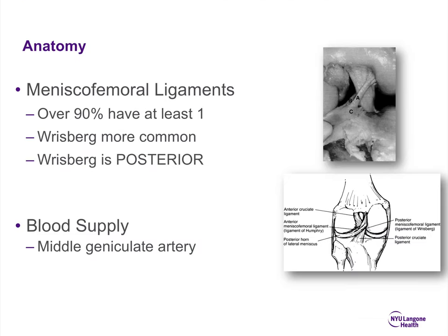In terms of meniscofemoral ligaments, over 90% of people have at least one. The Wrisberg ligament is more common and is posterior — W comes after H alphabetically. The Humphrey ligament is anterior to the PCL. The middle geniculate artery is the key structure that provides blood supply to the PCL.